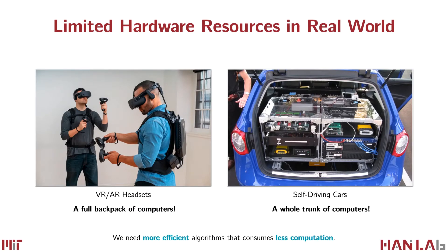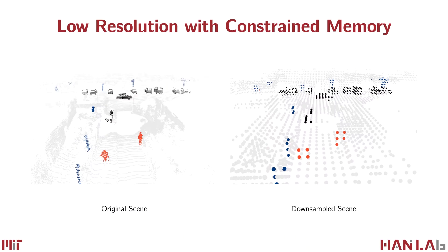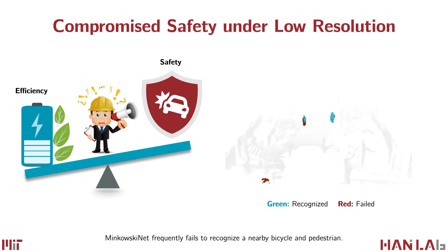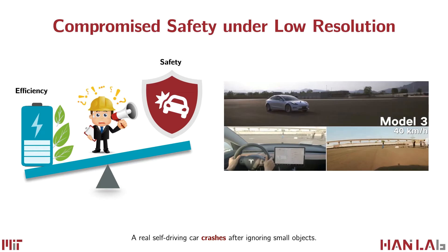On one hand, 3D deep learning models are usually deployed on resource-constrained hardware and require low latency. Therefore, we need to design efficient algorithms that do not consume intensive computation. On the other hand, safety is the top priority in autonomous driving. However, previous methods often need to downsample the input scene aggressively to a coarse-grained one, where small objects such as pedestrians and cyclists become indistinguishable. As such, the existing state-of-the-art model MinkowskiNet can frequently ignore a nearby bicycle or pedestrian, as shown in this video.